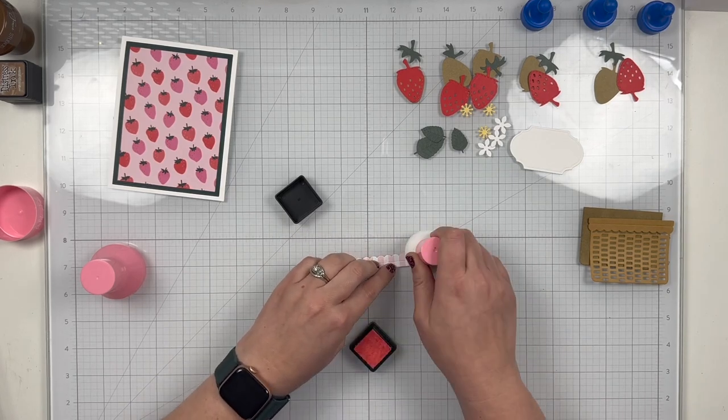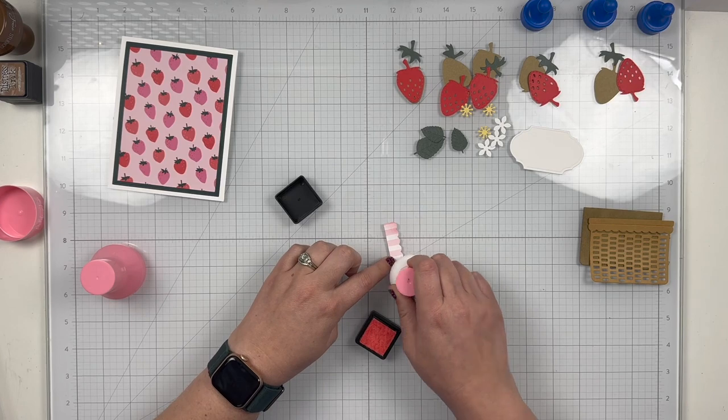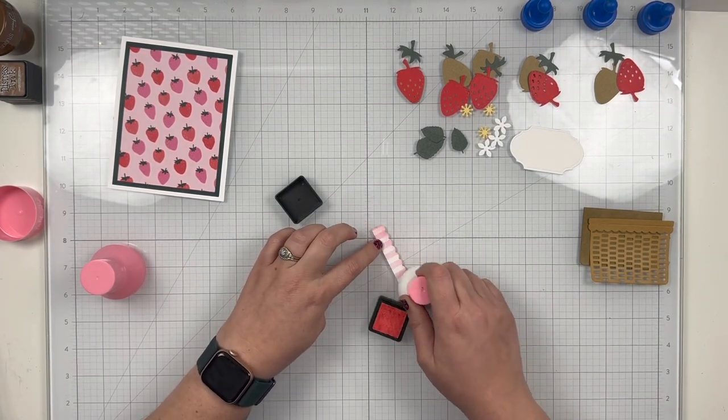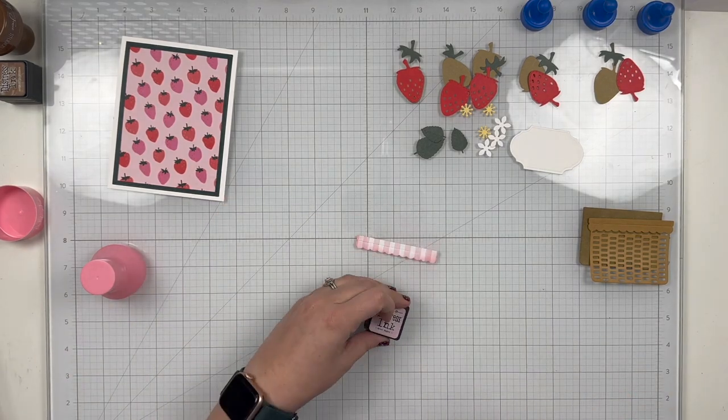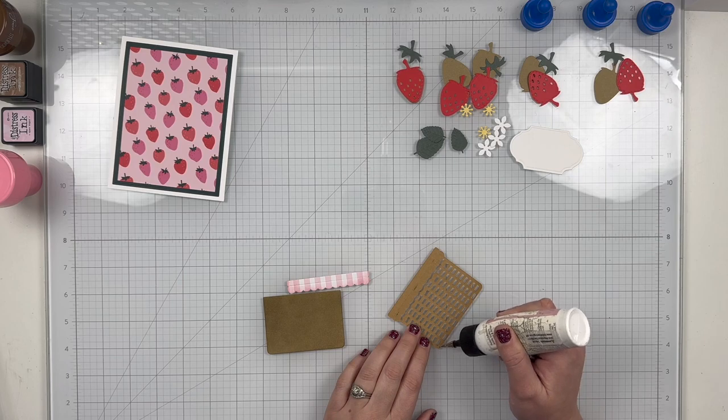And then using my paper pouncers again, I'm adding some spun sugar distress ink to my die cut. So just adding a little bit of ink. I wanted it very soft looking on the edges and the bottom of my, what I hope will look like fabric inside of my basket.